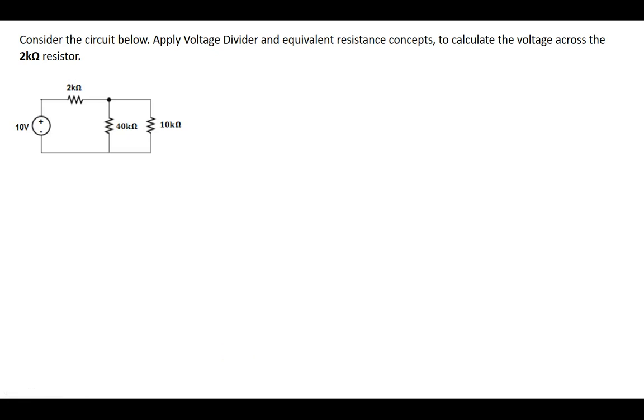Let's take a look at this resistive circuit with three resistors and a voltage source. It says applying voltage divider and equivalent resistance concepts, calculate the voltage across this top 2 kOhm resistor. So that's our goal, is to find the voltage across this resistor.